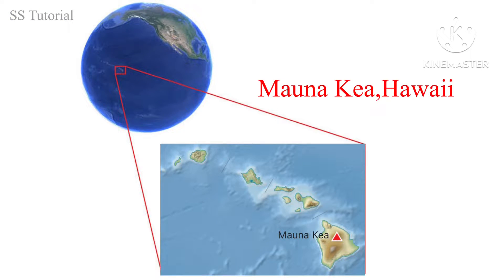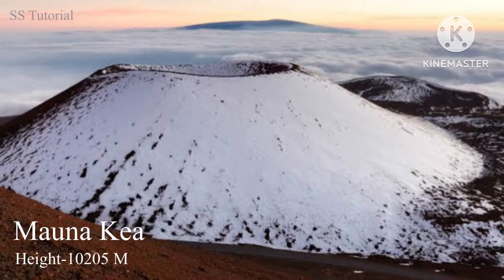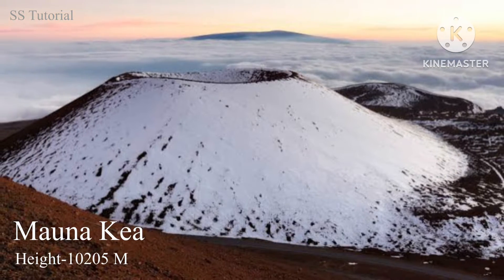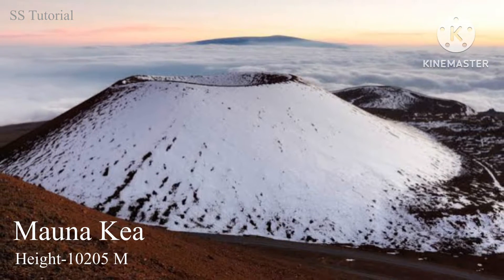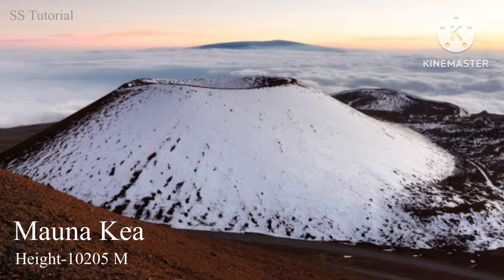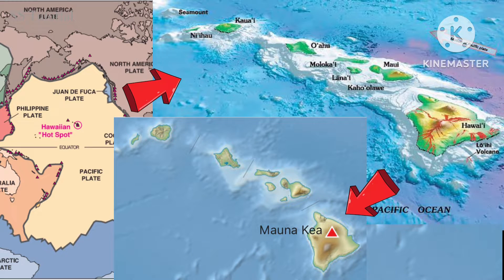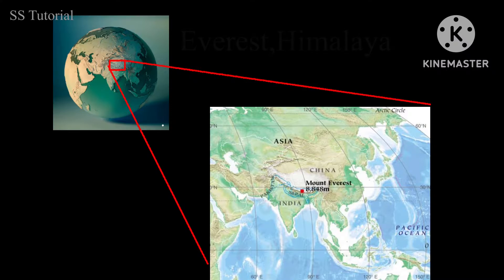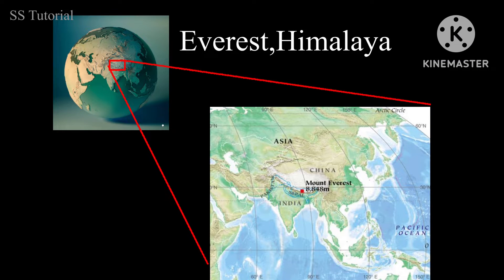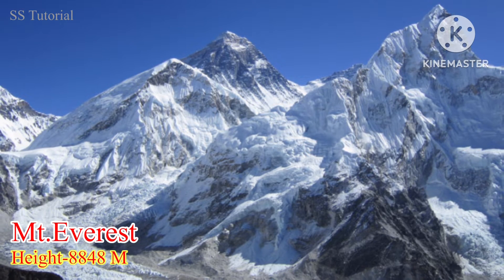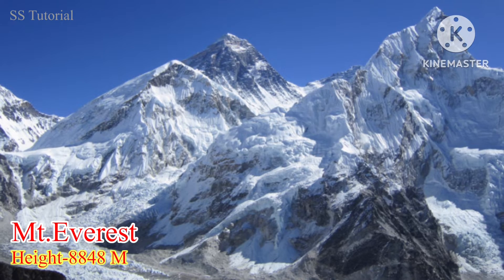Mauna Kea is a volcanic mountain of Hawaii island. It is elevated about 10205 meters from its base to summit, situated over a hotspot of the Pacific Ocean Plate. Everest is the tallest peak of the Himalaya, situated on the China-Nepal border, with a height of about 8848 meters.